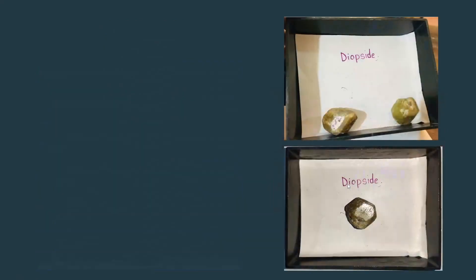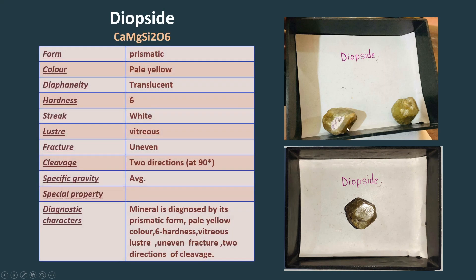Here you can see the diopside mineral, which is prismatic in form and pale yellow in color. It has translucent diaphaneity, six hardness, white streak, vitreous lustre, uneven fracture, and two-directional cleavage at 90 degrees.